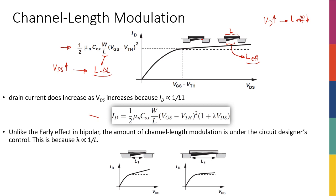Because of this, my current is not going to be perfectly constant. If VDS increases, it changes the length — that's why I call it channel length modulation. Because I don't want to deal with delta L in the denominator, I'm going to model this change. Since the denominator is decreasing, the entire expression is increasing, so I'll model that increase with a factor of (1 + λ·VDS), keeping L constant in the expression.